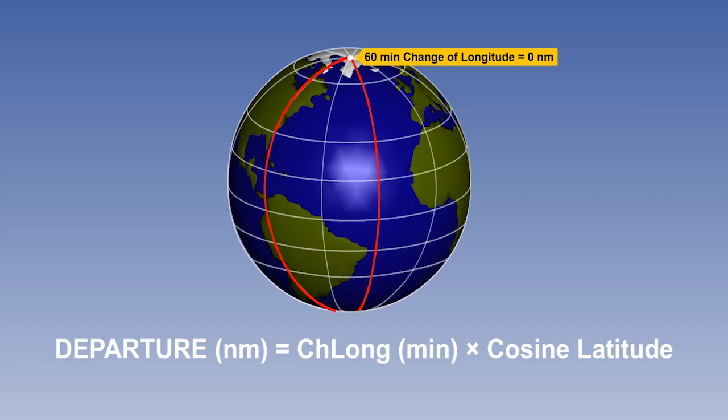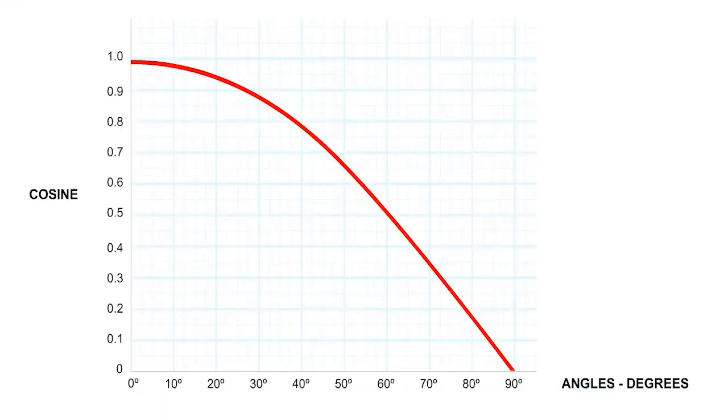In the same way that we examined the sine curve when looking at convergency, let's look at some of the more common values of cosines of angles, because these frequently come up in questions on general navigation. Here is a cosine curve. Let's look at the angles between zero and 90 degrees. The cosine of zero degrees is 1. The cosine of 30 degrees is 0.866. The cosine of 45 degrees is 0.7071. The cosine of 60 degrees is a half, or 0.5.